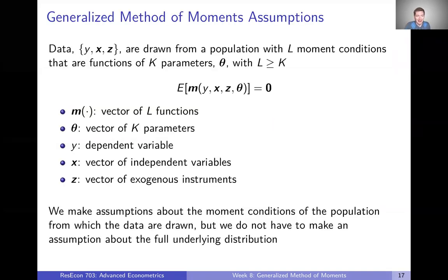The setup here is almost exactly the same. We're still going to assume that our data, those y's, x's, and z's, that set of data, are drawn from a population. But now we're going to have L moment conditions that are functions of K parameters, where L is greater than or equal to K.